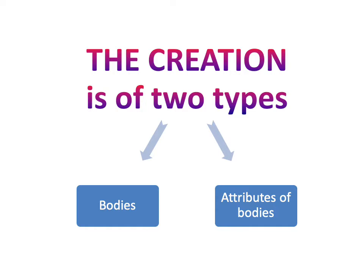Now when we say body here, when the Muslims — Ahlu Sunnati Wal Jama'ah — when they said body, they were very specific. They didn't mean something that has a length, width, or a depth. Rather, what they actually meant was anything that occupies a space. There are things that occupy a space that don't have a length, width and depth — so they wouldn't be, if you will, three-dimensional — but they occupy a space. This is the definition of a body.